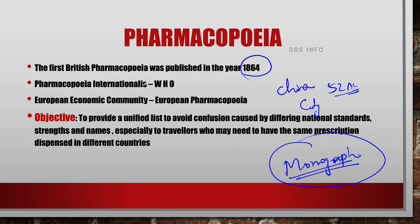The first British Pharmacopoeia was published in the year 1864. Then Pharmacopoeia Internationalis was published by WHO. The European Economic Community also started the initiative to publish the European Pharmacopoeia. All these are national and international developments that took place in the field of pharmaceutical chemistry.